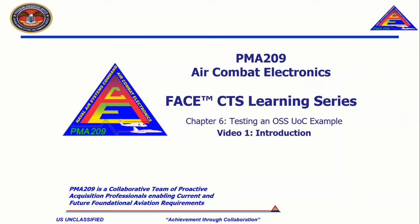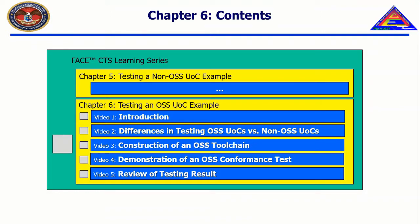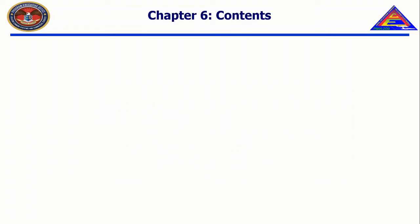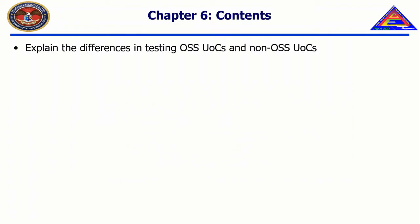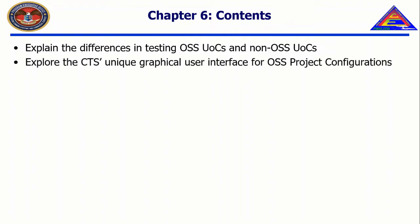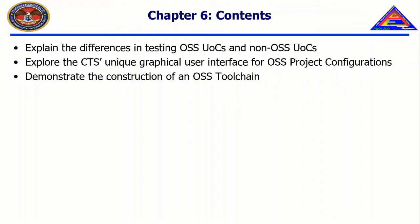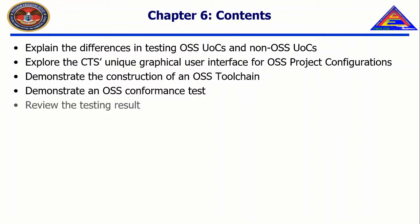Welcome to the CTS Learning Series, Chapter 6: Testing an OSS UOC Example. In this chapter, we will explain the differences in testing OSS UOCs and non-OSS UOCs, explore the CTS's OSS graphical user interface, demonstrate the construction of an OSS toolchain, demonstrate an OSS conformance test, and review the testing result.